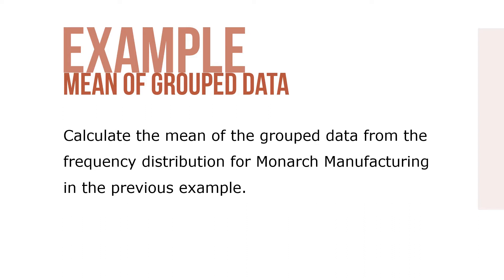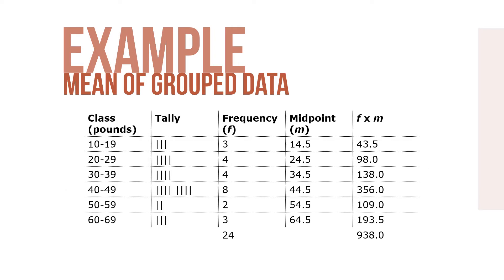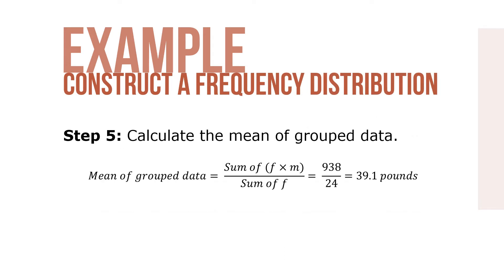Here's an example. Calculate the mean of the grouped data from frequency distributions for Monarch Manufacturing in the example provided. Begin by attaching the midpoint m and the frequency times midpoint f times m columns to the frequency distribution. After finding the sum of the frequency and the f times m columns, use these sums to calculate the mean of grouped data.